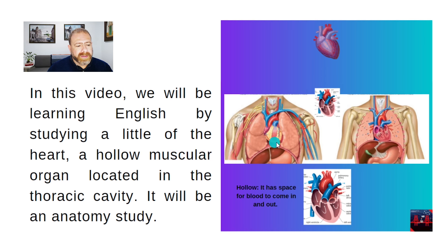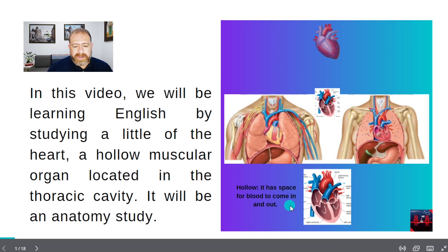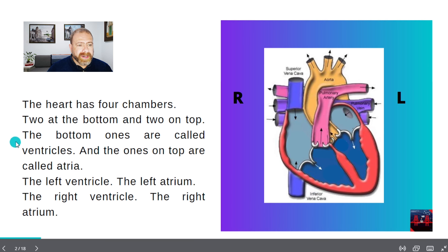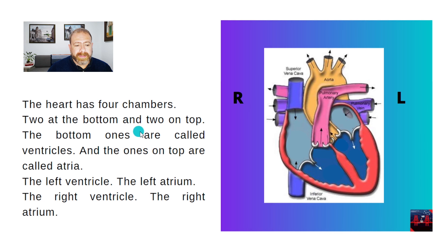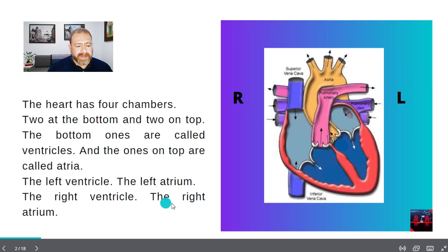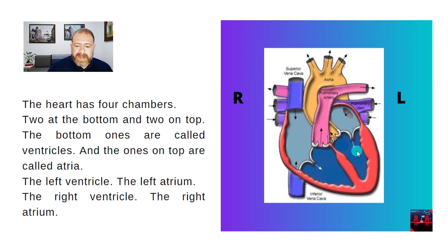The heart is a hollow muscular organ located in the thoracic cavity. It is hollow — it has space for blood to come in and out of the heart. The heart has four chambers: two at the bottom and two on top. The bottom ones are called ventricles and the ones on top are called atria — the left ventricle, the left atrium, the right ventricle, the right atrium.